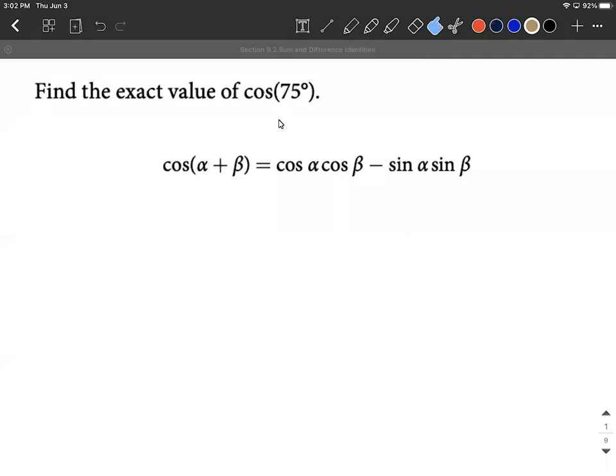Okay, let's work on finding the exact value of cosine of 75 degrees. This is only one way to do this, but being that this section 9.2 is all about sum and difference identities for sine, cosine, and tangent, I went ahead and pulled up the sum identity for cosine.